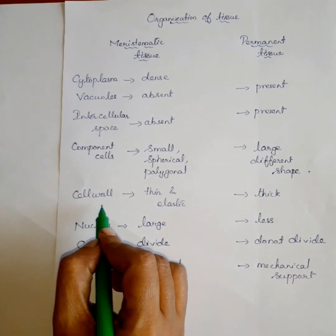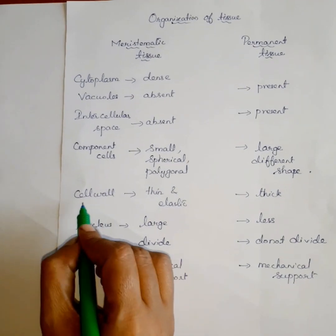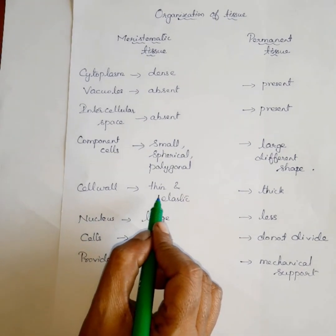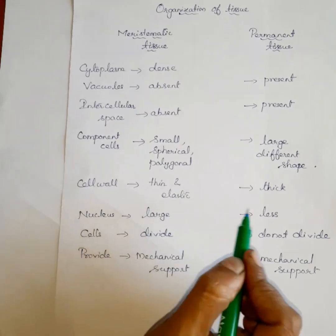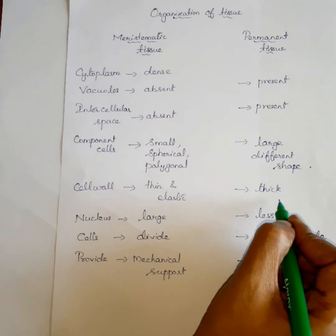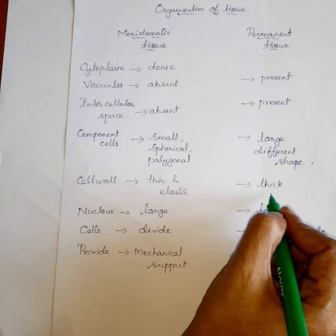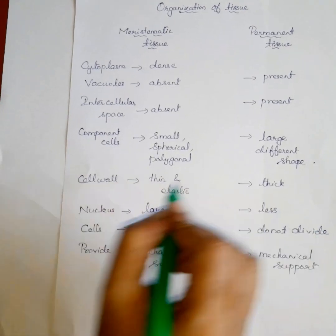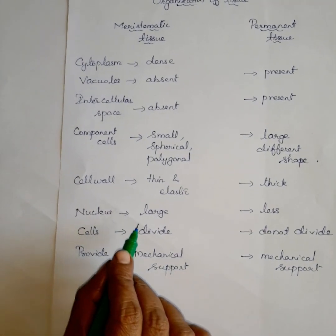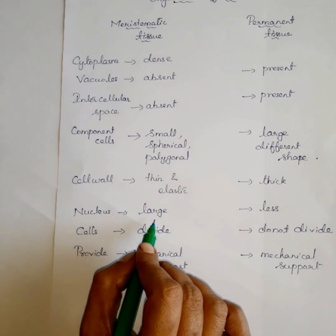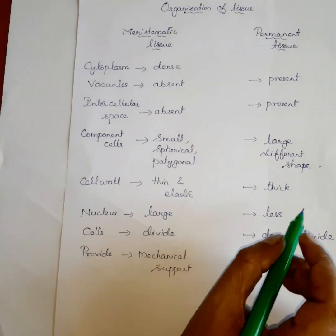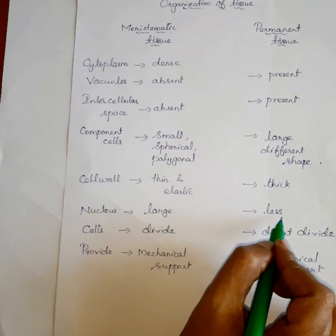Next one — cell wall. In meristematic tissue, the cell wall is very thin and elastic. In permanent tissue, the cell wall is thick. Next — nucleus. The nucleus is large in meristematic tissue, and less prominent in permanent tissue.